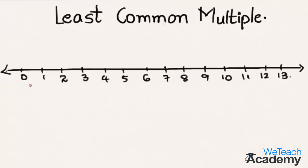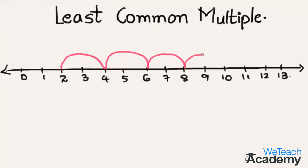Here there is a number line from 0 to 13. Now let us mark the multiples of 2 on the number line with the help of a curved line. Starting from 2, we reach the next multiple 4, then 6, then 8, then 10, and then 12. As the number line ends at 13, we stop here.